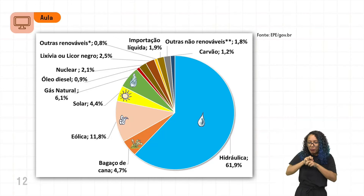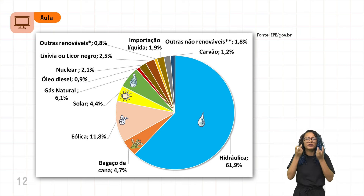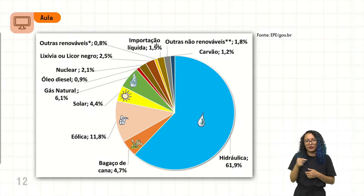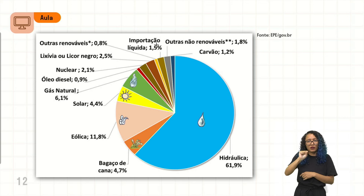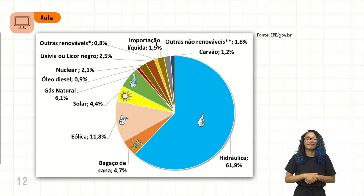Temos mais um gráfico onde observamos a participação das fontes de energia: a energia hidráulica com 61,9%, as fontes renováveis e não renováveis em destaque, óleo diesel, energia nuclear, energia solar com 4,4%, eólica com 11,8%, e a maior participação sendo a energia hidráulica. Vamos agora assistir um vídeo sobre a energia hidráulica, mostrando um pouco do funcionamento e da geração de energia na usina de Balbina, localizada no estado do Amazonas.